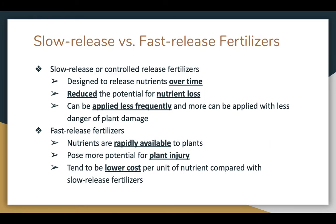We also see fertilizers classified as either slow release or fast release. Slow release fertilizers, sometimes called controlled release fertilizers, are designed to release their nutrients over time. This reduces the potential for nutrient loss within the soil because the fertilizer releases nutrients throughout a longer span of time, so they can be applied less frequently and more can be applied without danger of plant damage. Fast release fertilizers provide all of those nutrients rapidly — they are available immediately to the plants, which poses a potential for plant injury if too much is applied. They also tend to be lower in cost per unit of nutrient compared to slow release fertilizers.